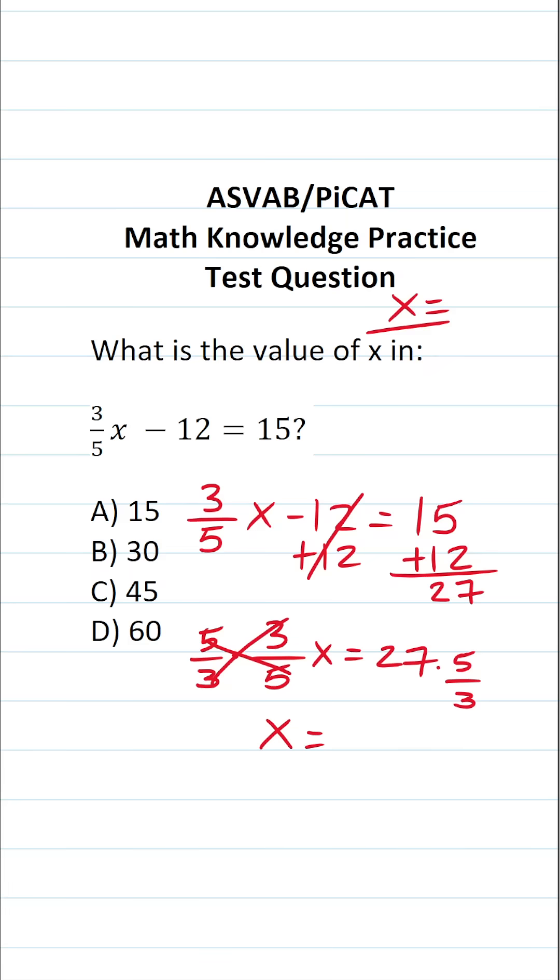Now at first glance, this math seems somewhat challenging to do. But you can write 27 as a fraction by placing it over 1. This enables you to cross-reduce. 3 goes into 3 one time, 3 goes into 27 nine times. This is 9 over 1, which is 9 times 5 over 1, which is 5.